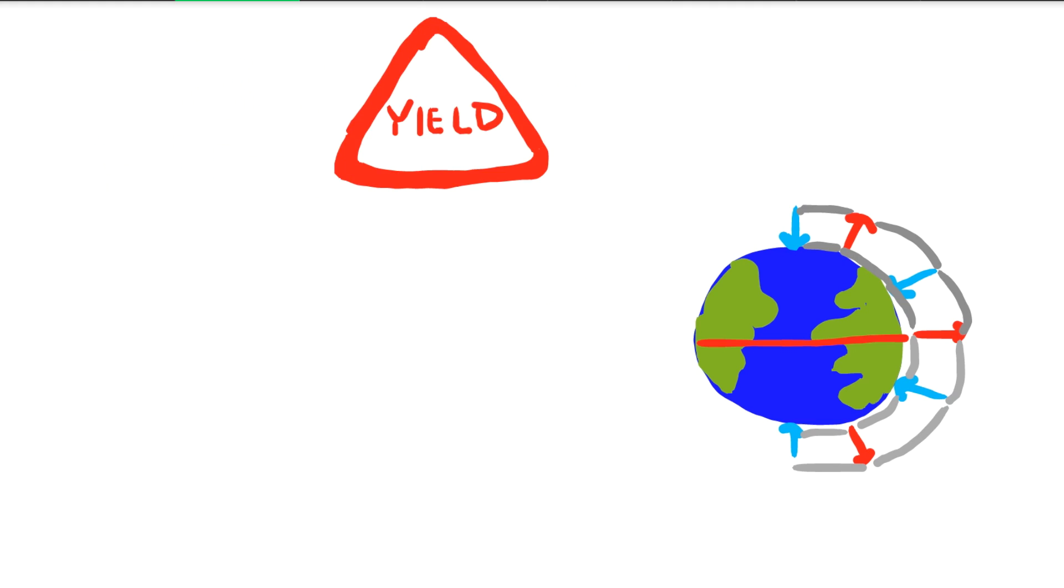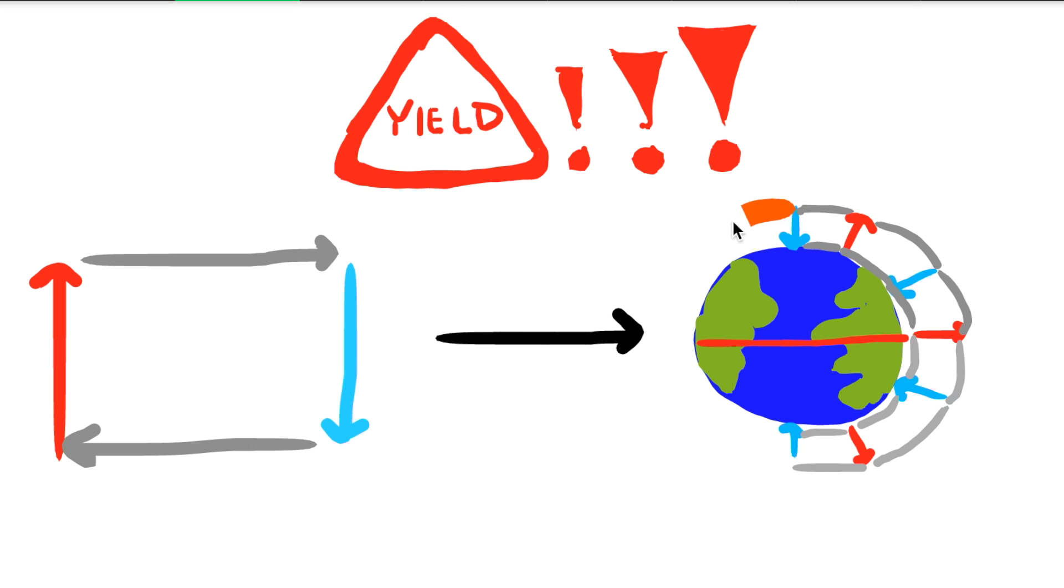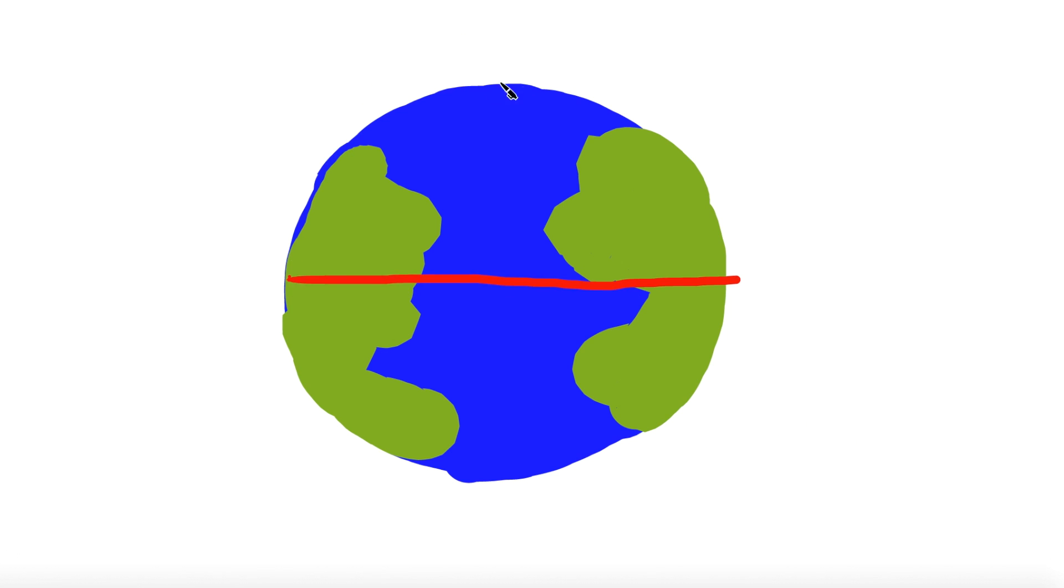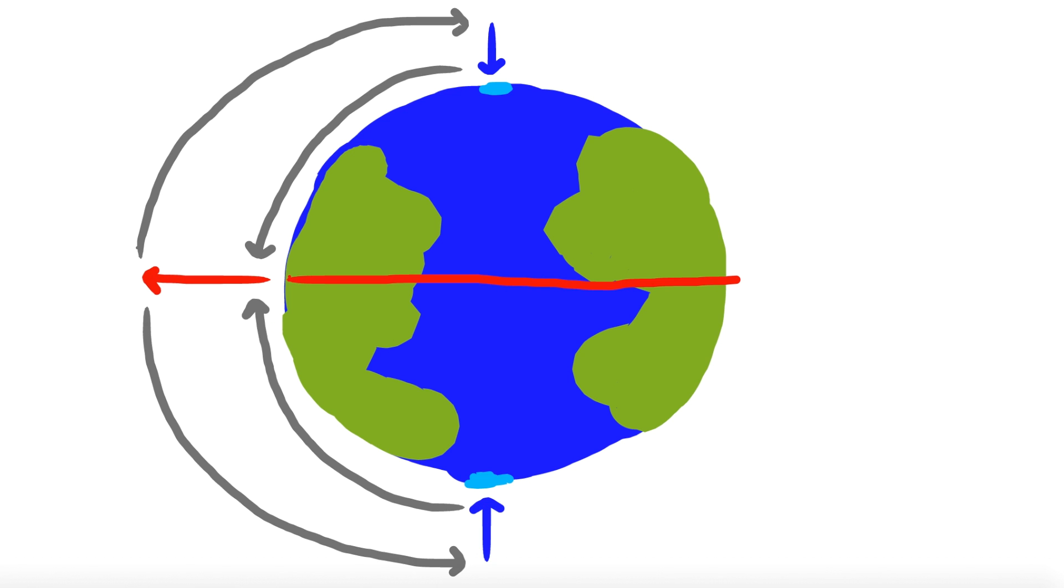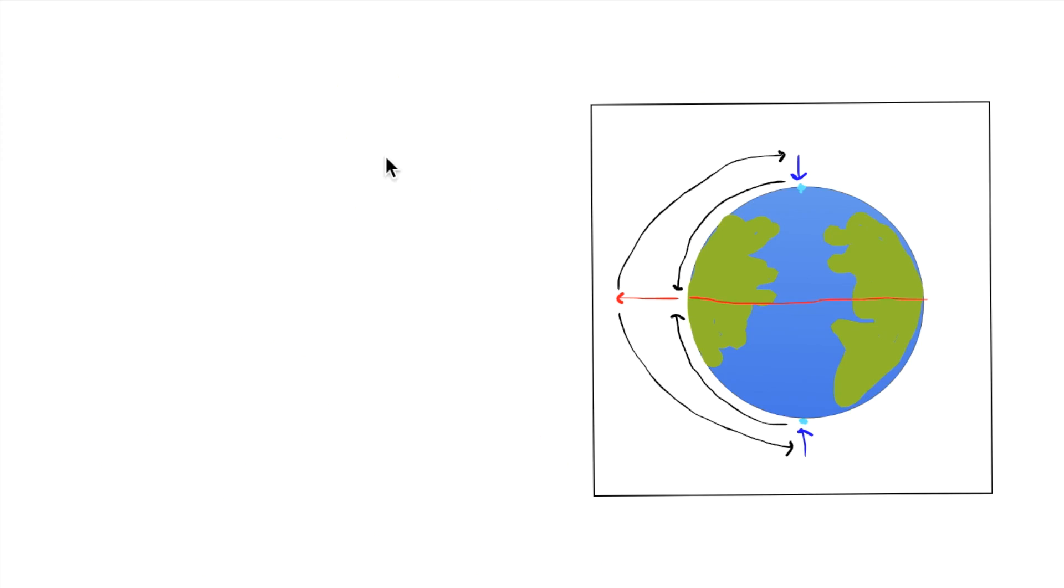But wait a burger flippin' second. From what we learned about convection, this shouldn't be the case. We have the really hot equator and the really cold poles on either end of the Earth. Shouldn't there only be one big convection current, a one-cell model? Haha, nope. That would only be the case if the Earth didn't spin.